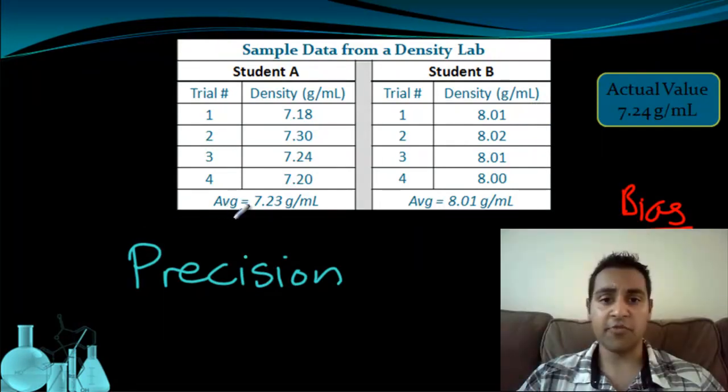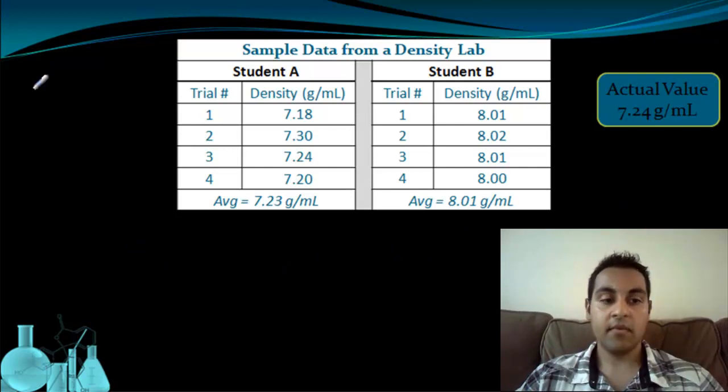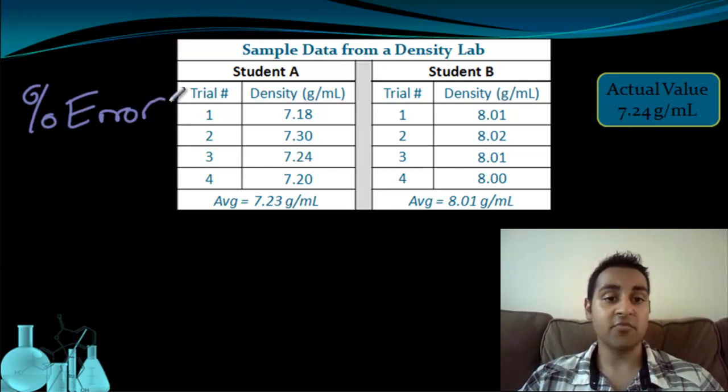Now one of the problems with referring to data solely as accurate or precise is that they are somewhat relative in the way we use them. Like student A is more accurate than student B. Student B is more precise than student A. So it's nice to have a quantitative way to evaluate how much error there is in someone's data. And that brings us to something called percent error.